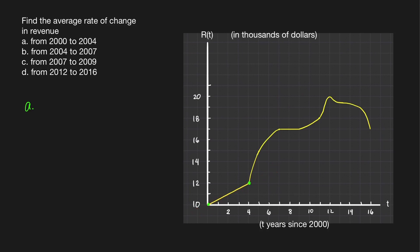Let us find the coordinates of these points to determine the slope of this line. This point here is (0, 10), and then this point has coordinates (4, 12). So the average rate of change in revenue is just the slope of this line: 12 minus 10 over 4 minus 0, which is equal to 2 over 4, which is equal to 1/2.